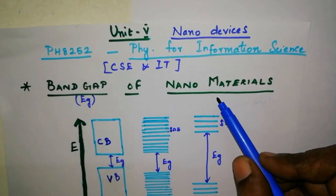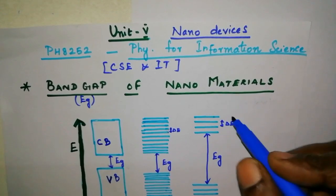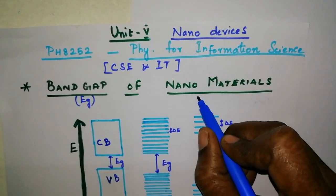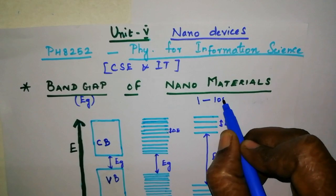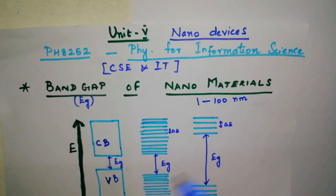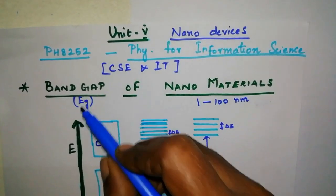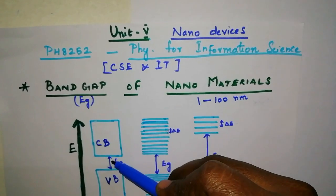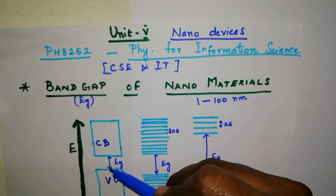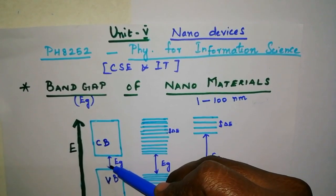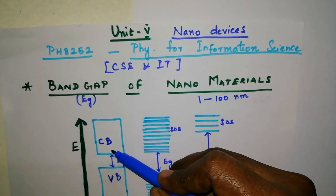What are nanomaterials? Nanomaterials are small sized materials ranging between 1 to 100 nanometer. What is a band gap? Band gap is the energy gap or energy separation between the valence band and the conduction band.